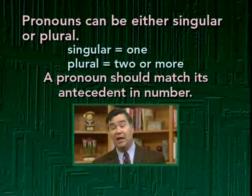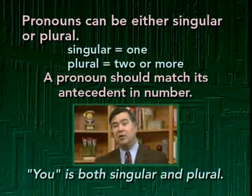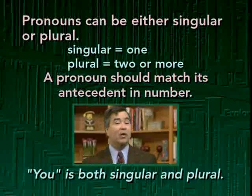Notice one curious thing about the English language: the pronoun you can be both singular and plural. That's the only pronoun in English that works both ways. Because there's no differentiation between singular and plural in you, some linguists theorize that speakers have invented phrases like 'you people,' 'you guys,' 'yous,' or 'y'all' down south to stand in for the plural you, which doesn't really exist.